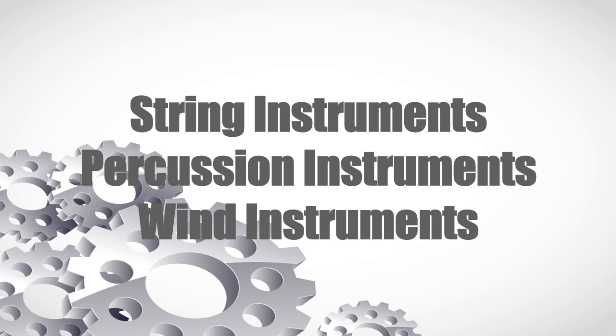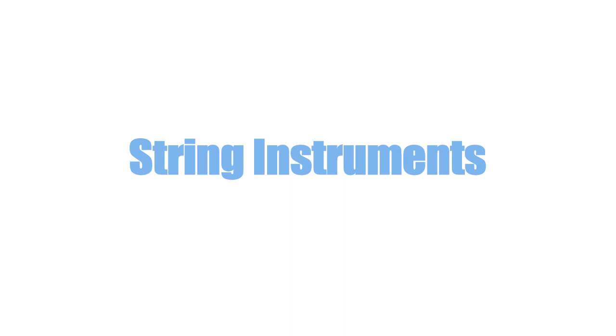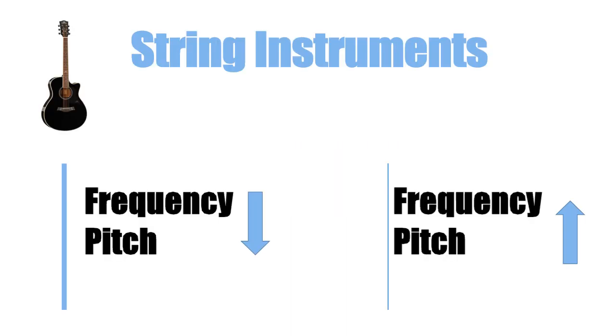How a string instrument works: Most string instruments consist of four or more strings. All the strings are made in different gauges. We'll take the guitar as an example. When the gauge of a string gets thicker, the frequency gets low and it produces a low note. When the gauge gets less thick, it produces a higher note.